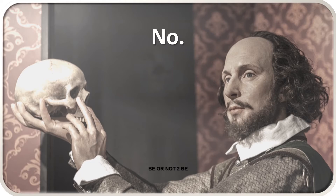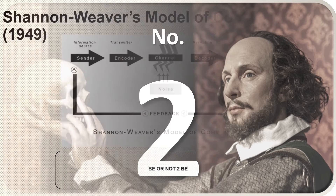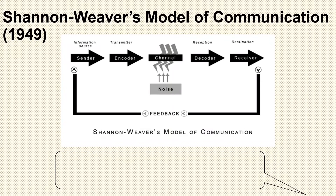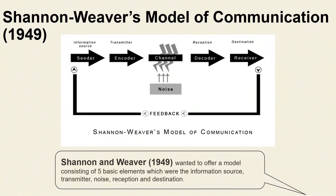Number 2: Shannon-Weaver's model of communication, 1949. Shannon and Weaver wanted to offer a model consisting of five basic elements: the information source, transmitter, noise, reception, and destination.